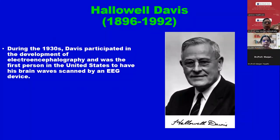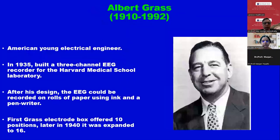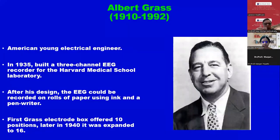Similarly, you may have heard of Jun Kimura, who is so well known in electrophysiology. He would pick up the electrode, put it on his median nerve, and demonstrate how carpal tunnel syndrome looks. He would also demonstrate blink reflex by putting the electrode on the supraorbital nerve. This American young electrical engineer in 1935 built a three-channel EEG — the first was a one-channel EEG at Harvard Medical School. After his design, the EEG could be recorded on rolls of paper using ink and pen writer, which were analog machines.